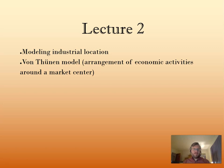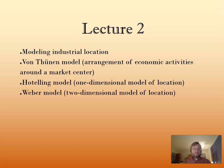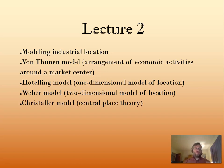We're going to go through a series of well-known models of industrial location. Starting with the von Thunen model about the arrangement of economic activities around a market center. Then the Hotelling model, a one-dimensional spatial model. Then the Weber model, a two-dimensional model. Then the Christaller model, also known as central place theory. And we'll finish up by looking at the concept of an urban hierarchy.